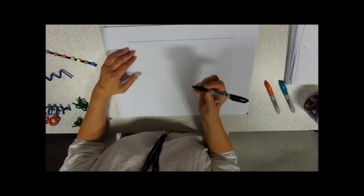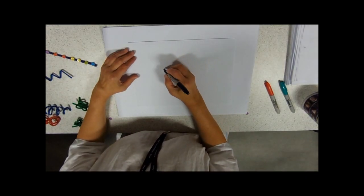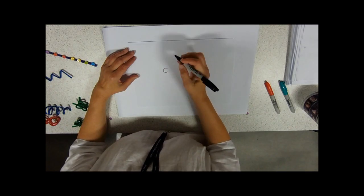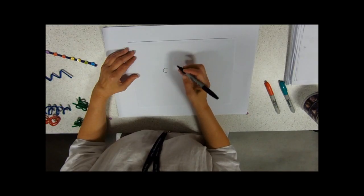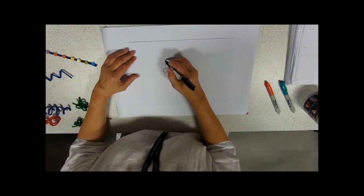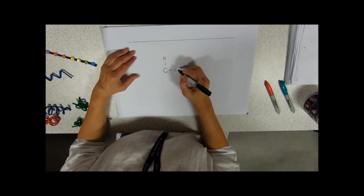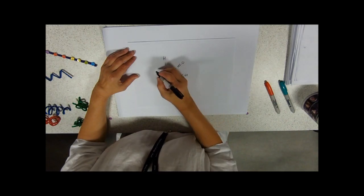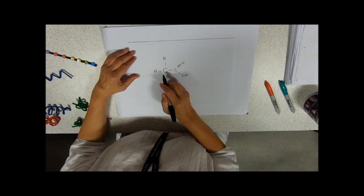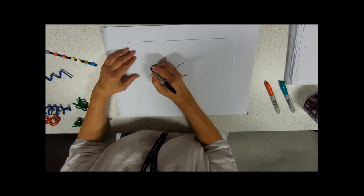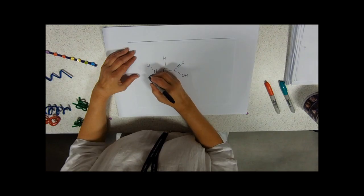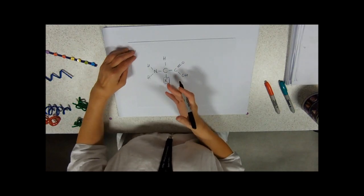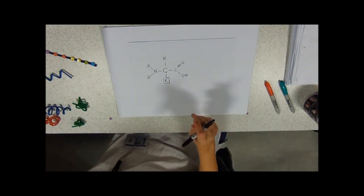So the basic monomer, the building block of these polymer proteins, is an amino acid. Drawing an amino acid: central carbon, a hydrogen, carbon double bonded to oxygen bonded to an OH group, central carbon again bonded this time to nitrogen with two hydrogens, and then this strange letter R. Now R means that it could be anything.